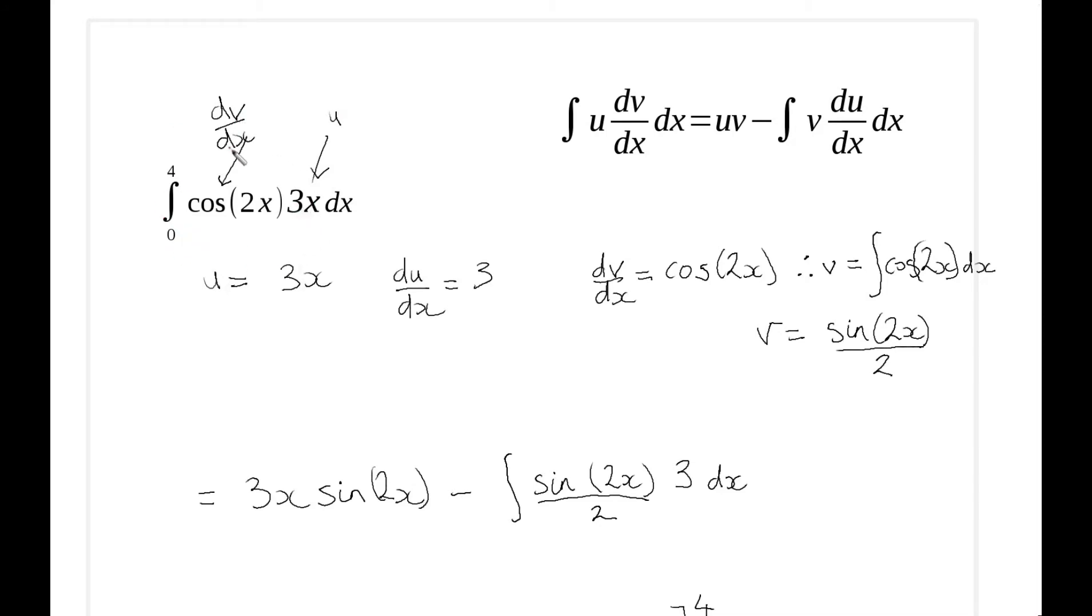What I've done here is I've changed this around the other way. I've decided that the 3x will be my u and this will be my dv/dx. Then I've worked out my values accordingly and substituted them into the formula. I've got 3x·sin(2x)/2 minus this term here, which now has some function times a constant. There's no x here, so we can actually solve this.